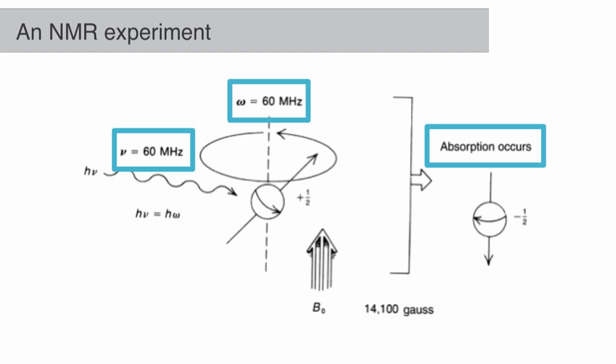The nucleus then flips back to its original spin and in doing so releases that resonance energy, which is captured by a detector.